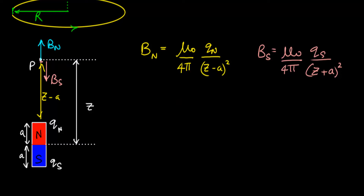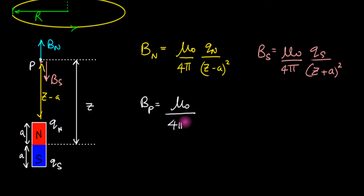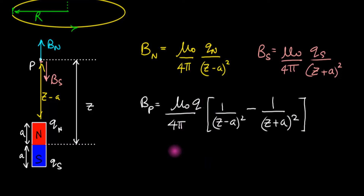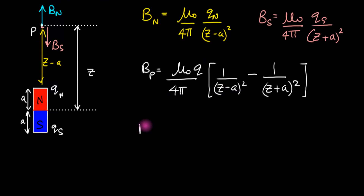The total magnetic field at point P is the difference between them. B_N is bigger because q_N is closer. q_N and q_S have the same magnitude but opposite sense, so we get B_total equal to mu-naught over 4-pi times q — their common magnitude — multiplied by 1/(z minus a)² minus 1/(z plus a)².